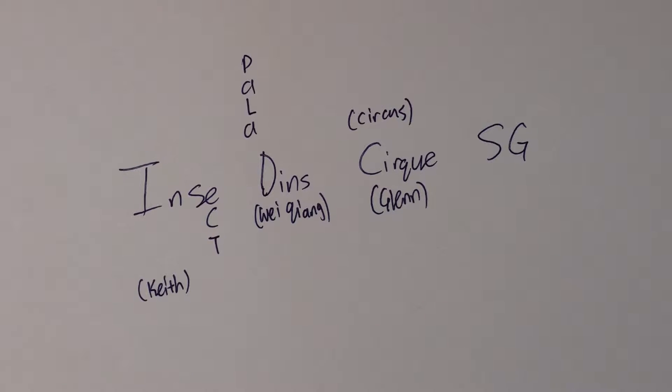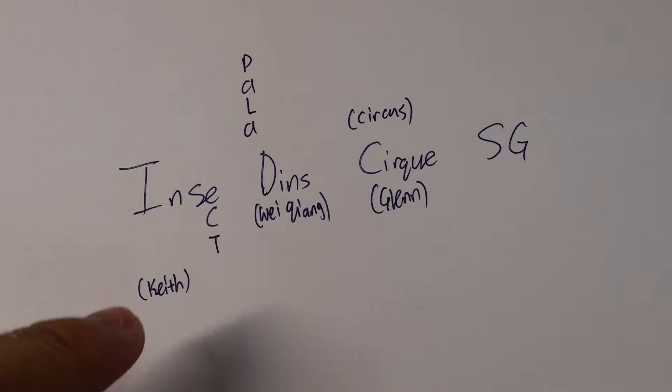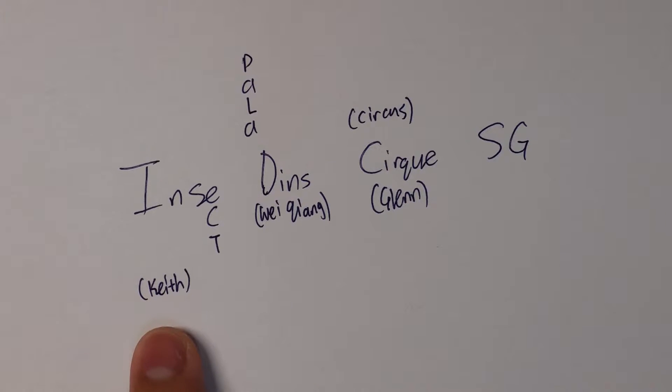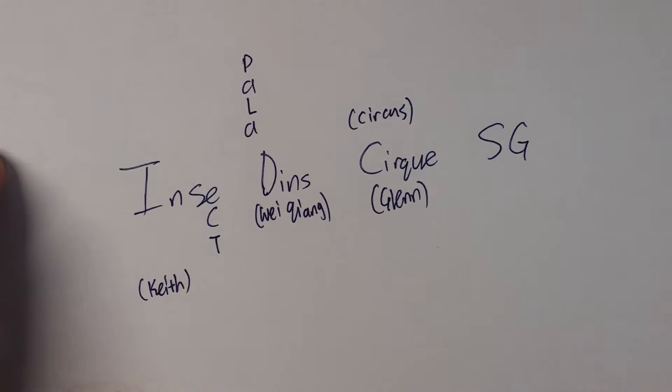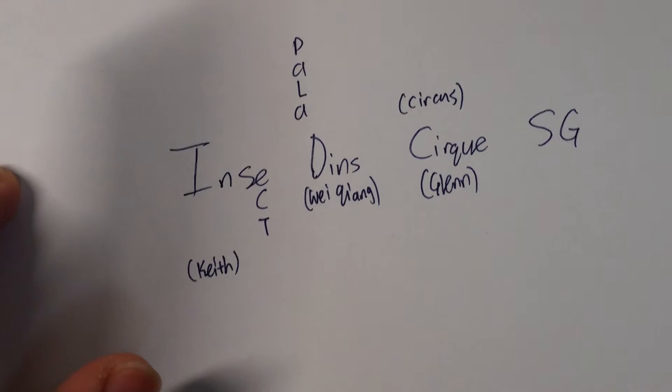Okay, back to the video. Incident Cirque SG, as some of you guys know, is our channel name. The channel is comprised of three people including me—I'm Keith, of course, and Weiqiang, along with Glenn. So how did we get this channel name?